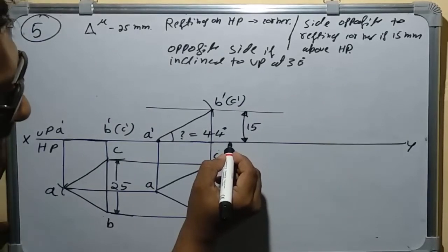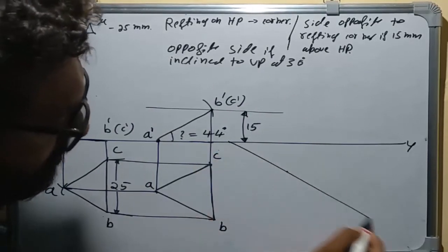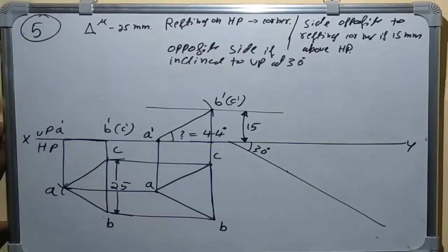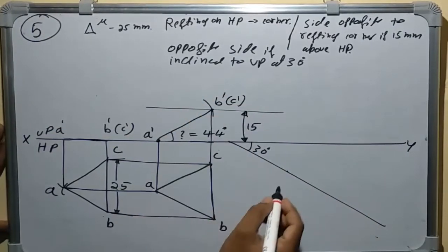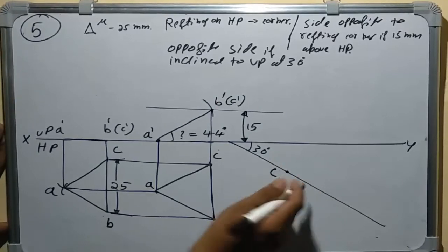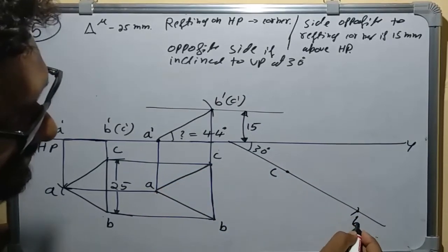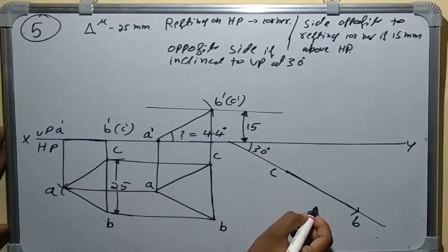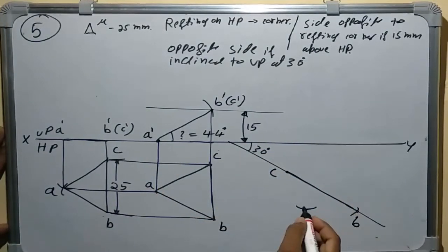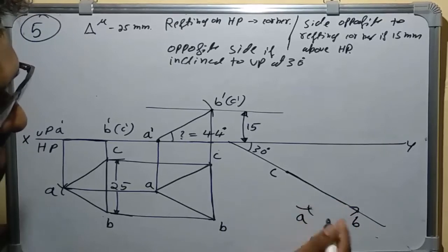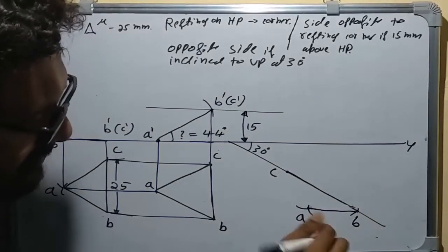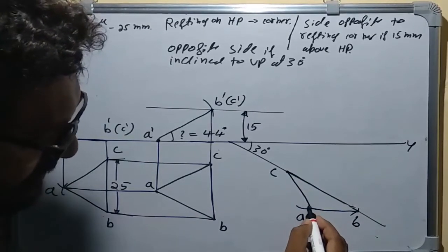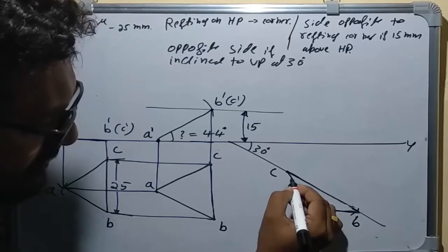The BC side should be kept on the 30-degree line. We first mark point C on the line, then measure C to B, draw an arc, and get B. We join B to C with a visible line. To get point A, we measure C to A, take C as center and draw an arc; then measure B to A, take B as center and draw another arc. Their intersection gives A. We then join A to B and C to A. Only the profile lines should be visible; remaining lines should be drawn as normal lines.